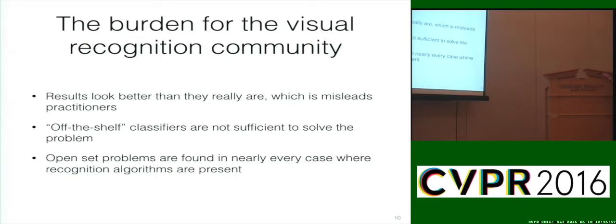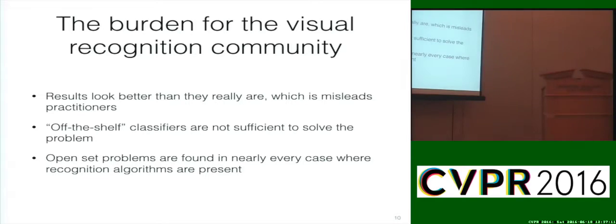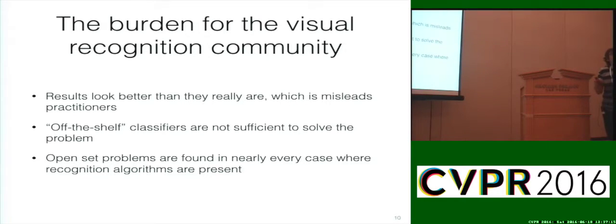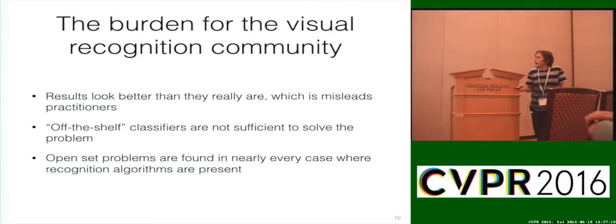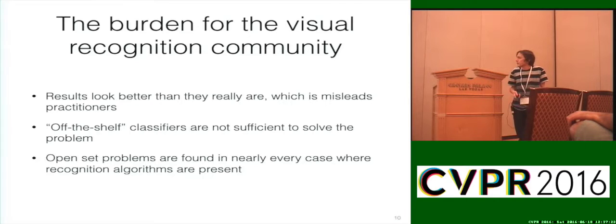Off-the-shelf classifiers are not sufficient to solve the problem. You can't just take SPM off the shelf and apply it, because it has no inherent way to reject unknown samples — it will happily give you labels for everything you trained with. But as unknown inputs come into the system, it becomes a bigger issue.